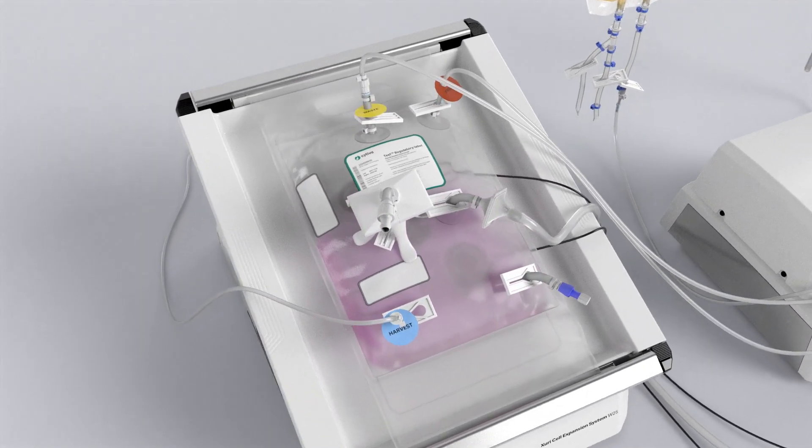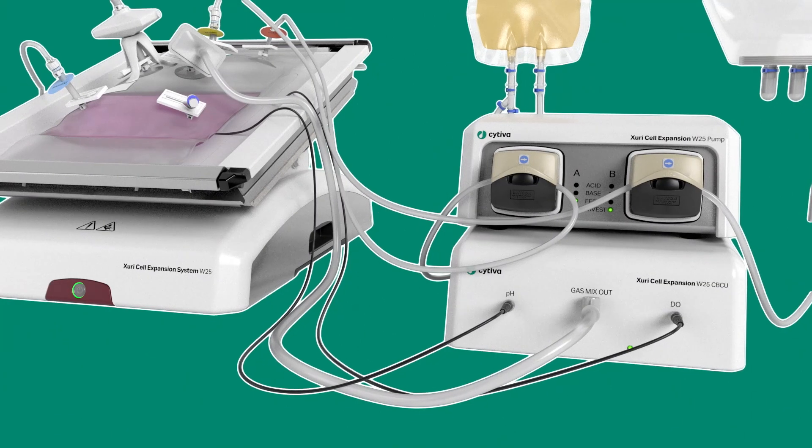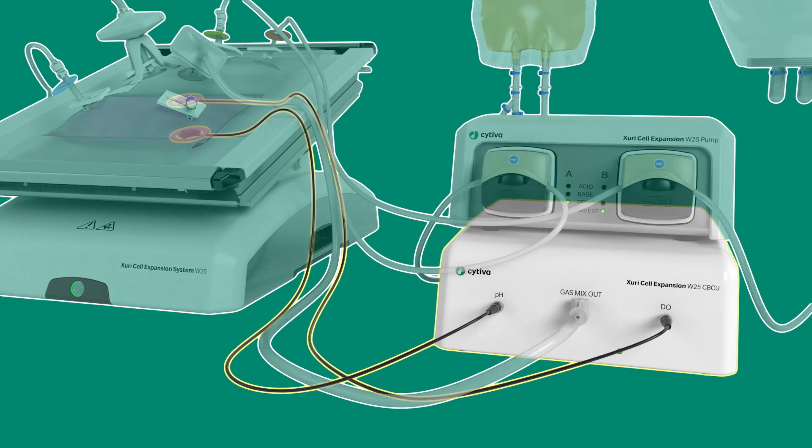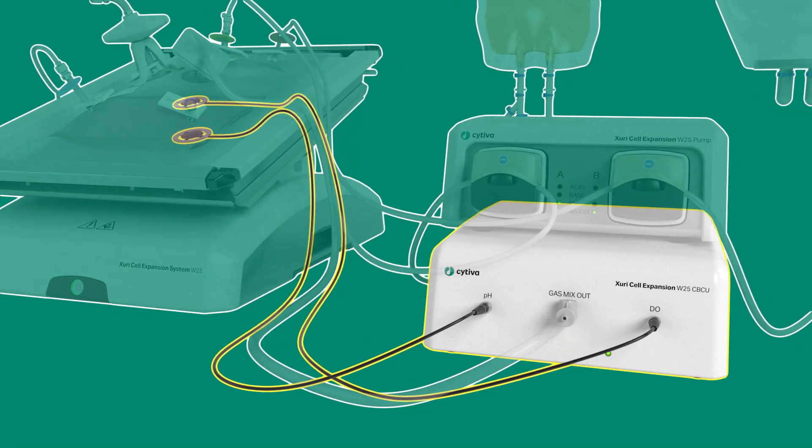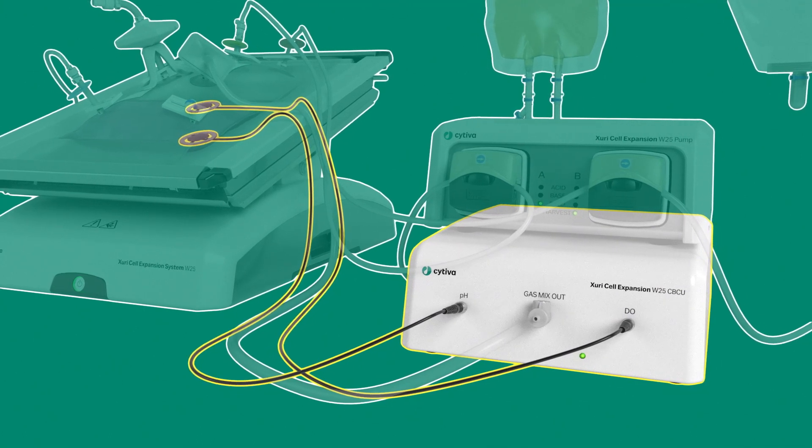Our cell bag bioreactor includes single-use optical spot sensors for measuring pH and dissolved oxygen. They're specifically designed to provide the high accuracy and process control you need. To measure pH and dissolved oxygen, you'll need a gas mixer and fiber optic cables designed for use with the Zuri system.